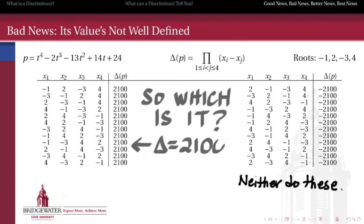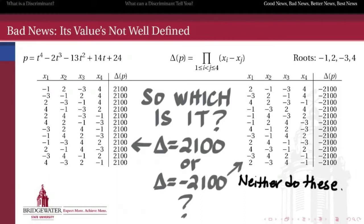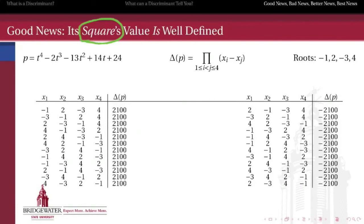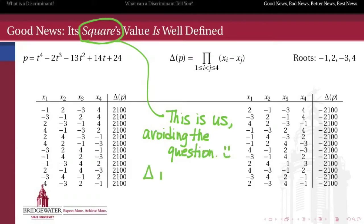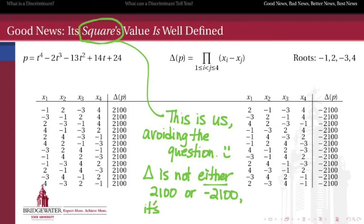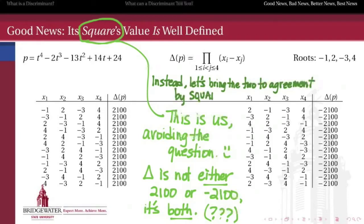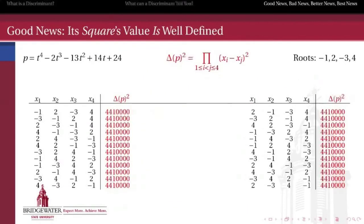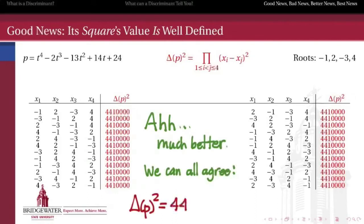So a student of algebra will ask: which is it? Is the discriminant of this polynomial positive 2100 or negative 2100? And like any good teacher, we avoid that question. We avoid it by never thinking of the value of the discriminant in isolation. We don't care whether the discriminant is 2100 or negative 2100. Somehow it's both. We would like our discriminant-like object to have a single value we can all agree upon. So what we do is mediate between these two values by thinking of the square of the discriminant — if we square everything, then both groups of orderings agree on the number 4,410,000.